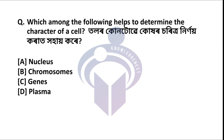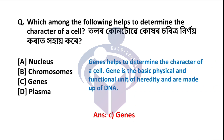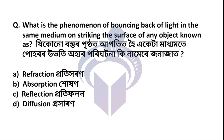Next question: Which among the following helps to determine the character of a cell? The correct answer is option C: gene. Genes are the basic physical and functional unit, and characters are determined by DNA. Next question: The phenomenon of bouncing back of light in the same medium on striking the surface of an object is known as — the correct answer is option C: reflection.